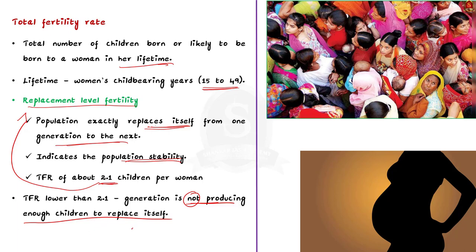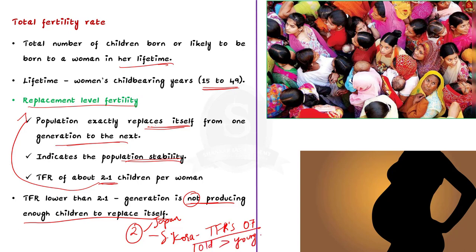Two East Asian nations — Japan and South Korea — are facing this situation right now. South Korea's total fertility rate is only 0.7. If this continues for some more years, there will be a huge old-age population in the country with very little young population.